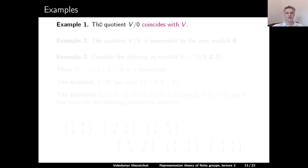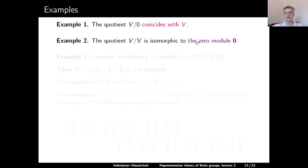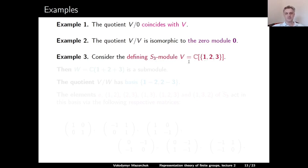Here are some examples. Example 1: if you factor out the zero submodule, you get the original module back. Example 2: if you factor out the module itself, you get the zero module. Example 3: consider the natural S₃-module V given by the linearization of the natural action of S₃ on {1, 2, 3}. The linear span W of the vector 1+2+3 is a submodule of V, because any element of S₃ just permutes the elements in this combination, leaving it intact. So W is a trivial submodule of V.